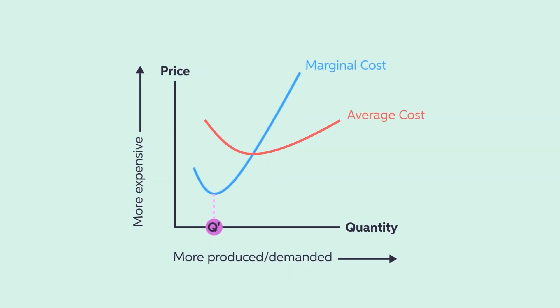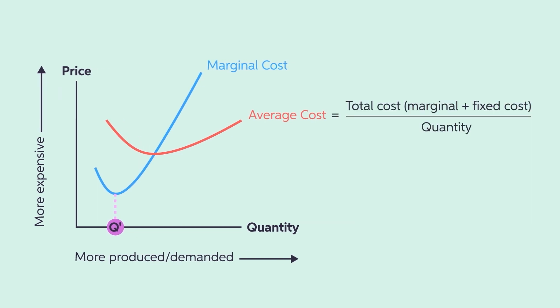Now let's add the average total cost curve to the marginal cost. As the name suggests, the average total cost curve takes into account all the units produced, and not just each one like the marginal cost does. Its formula is the total cost divided by quantity. The average total cost can differ from the marginal cost given fixed costs or efficiencies in production. The average total cost curve can look more like a U instead of a J, since in the beginning of production, there is a fixed cost spread over a small quantity that eventually gets spread out as more and more quantity gets produced. The average total cost can decline over time since more of the overall cost is spread over more additional units.